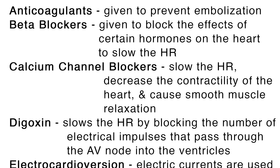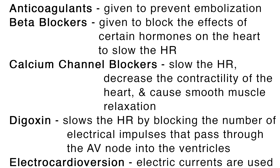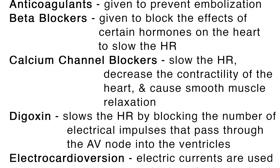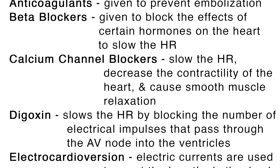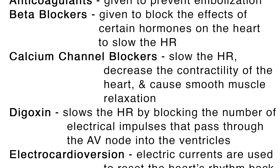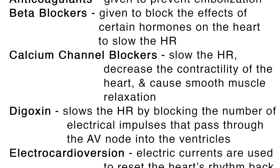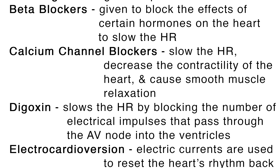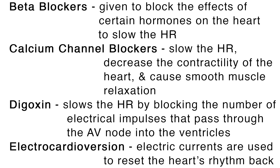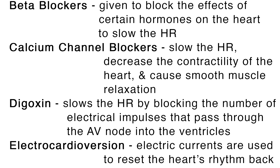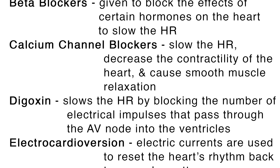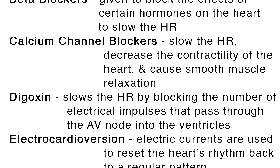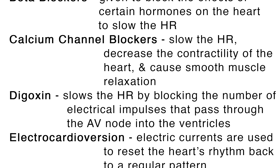Anticoagulants are given to prevent embolization. Beta blockers are given to block the effects of certain hormones on the heart to slow the heart rate. Calcium channel blockers slow the heart rate, decrease the contractility of the heart, and cause smooth muscle relaxation. Digoxin slows the heart rate by blocking the number of electrical impulses that pass through the AV node into the ventricles.